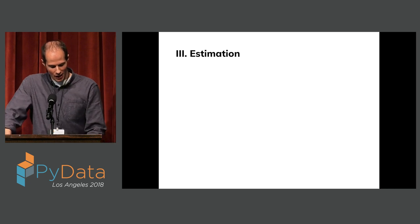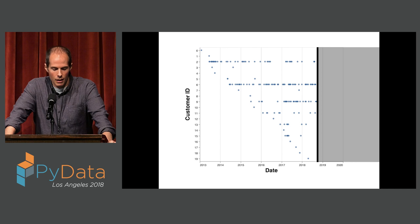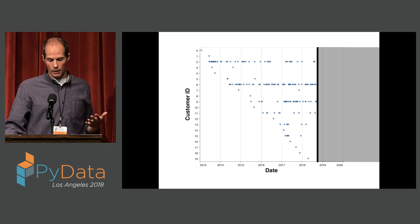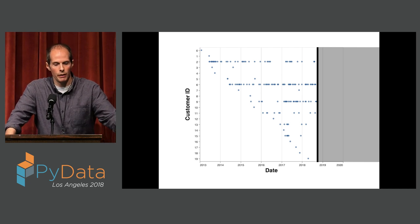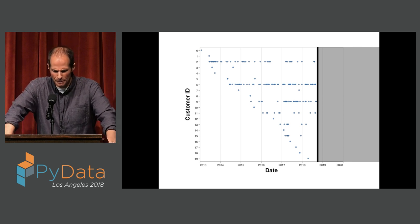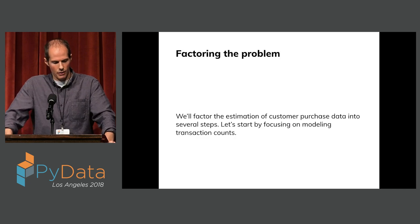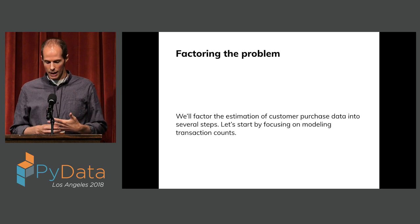That's the essence of the hard part of customer lifetime value: dealing with incomplete data. To deal with that, we're going to bring in some models. The game plan is fairly simple: we're going to build models based on past data, use those models to impute data past today — past that black line — and then analyze the combination of real data and expected future data together as if they were the same. Customer purchase behavior is fairly multifaceted data: you've got counts, churn behavior, transaction amounts, and dates. So we need to factor the problem into sub-problems, starting by focusing almost entirely on modeling transaction counts.